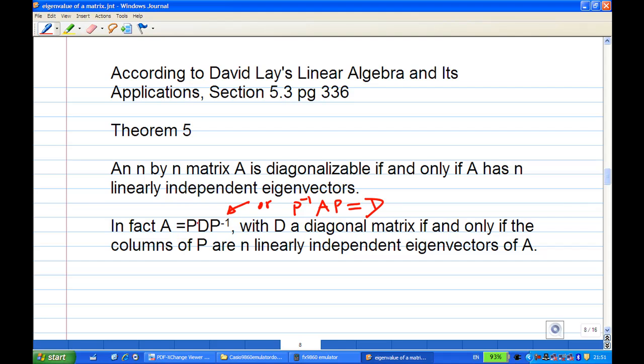In fact, A equals PDP inverse or equivalently P inverse AP equals D as given in the question, with D a diagonal matrix if and only if the columns of P are n linearly independent eigenvectors of A.